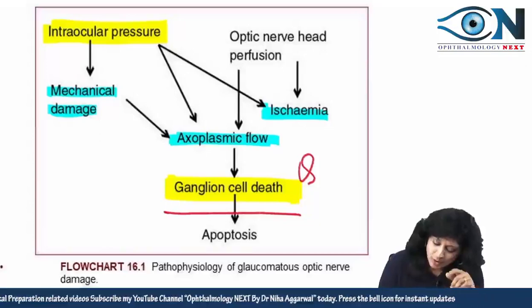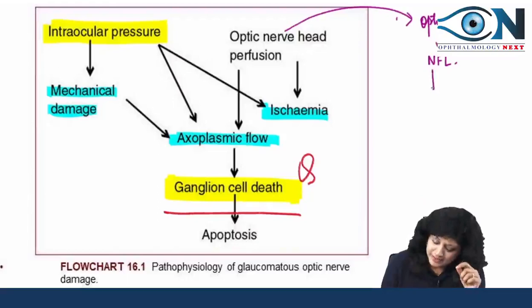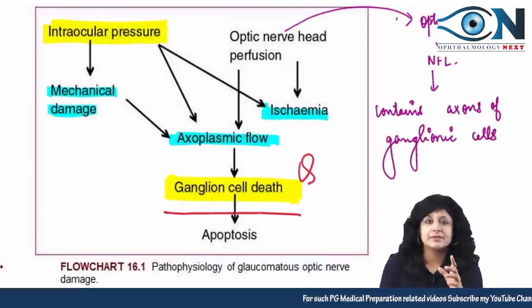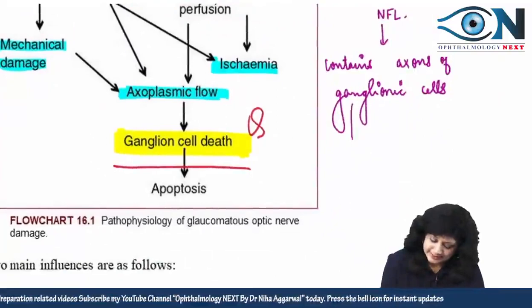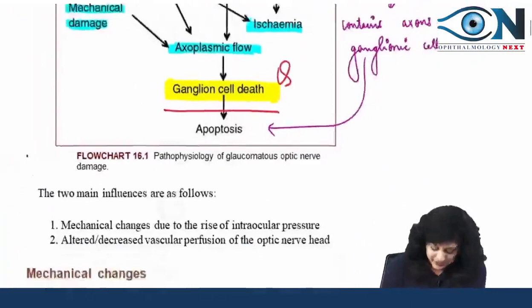The optic nerve is the continuation of the nerve fiber layer of the retina and actually contains the axons of the ganglionic cells. The nerve fiber layer making up the optic disc contains axons of ganglionic cells. These cells are dying because of apoptosis — not necrosis. The pathophysiology: ischemia → hypoxia → apoptosis of retinal ganglionic cells.